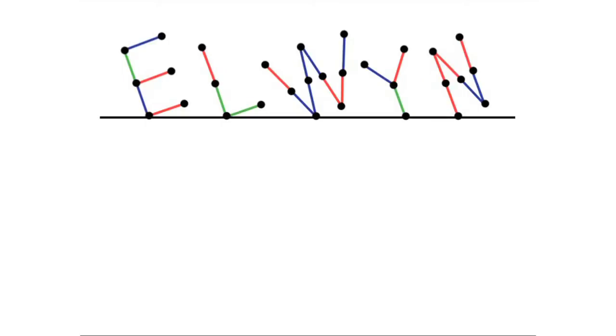Hackenbush is played on a graph, each of whose branches can be any one of three colors: blue, red, or green.